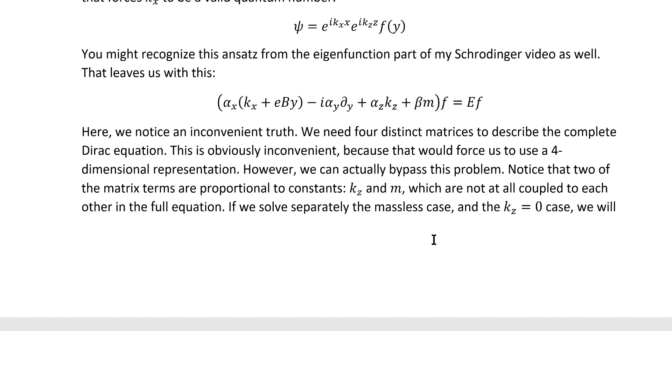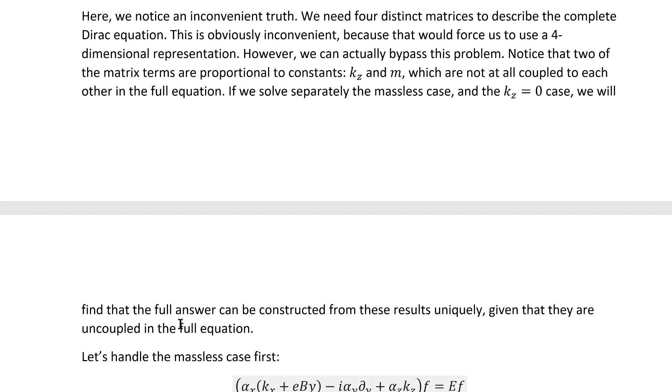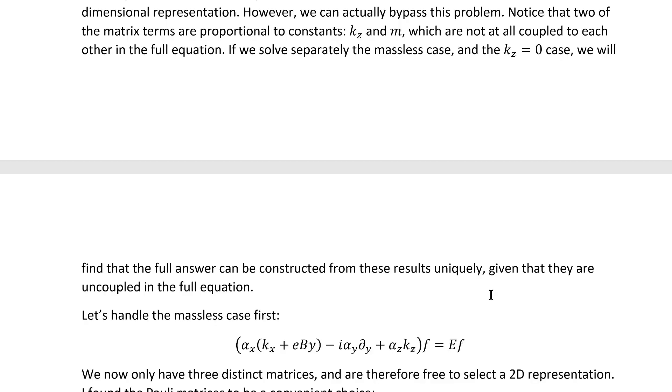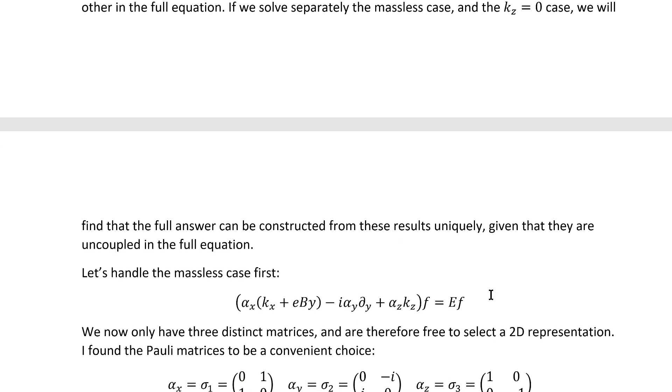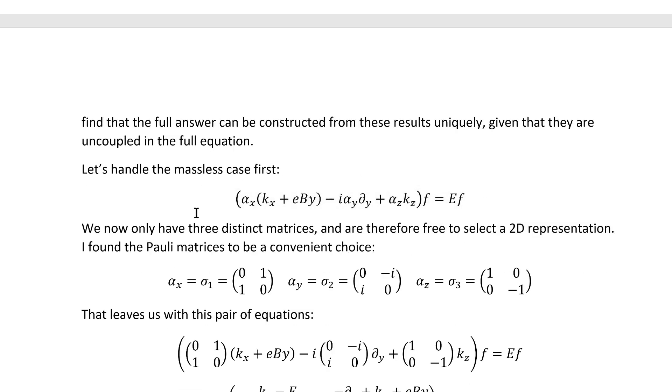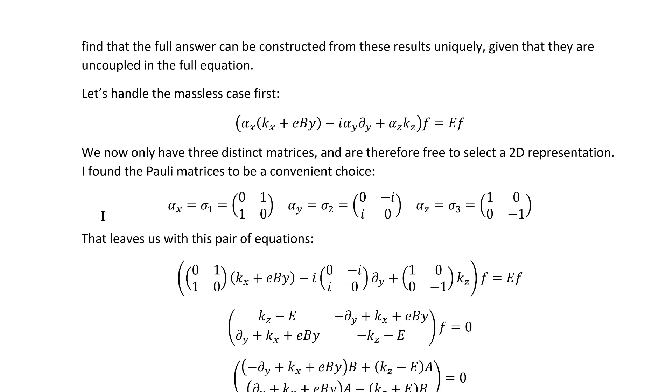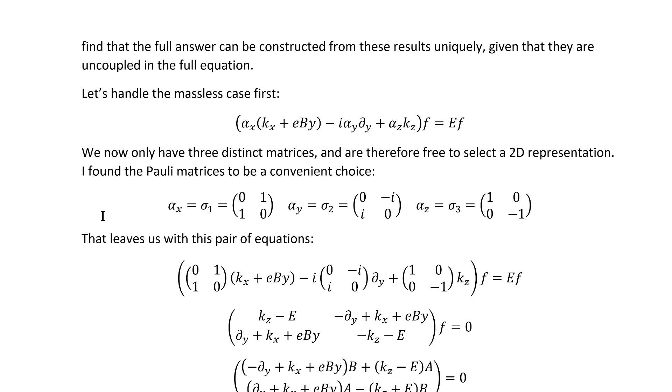If we solve separately the massless case and the kz equals zero case, we'll find that the full answer can be constructed from these special cases uniquely, given that they're completely uncoupled in the full equation. Let's handle the massless case first. This is the equation we need to solve. We now have only three distinct matrices by design, and therefore we can select a 2D representation. The Pauli matrices are a particularly convenient choice for that.